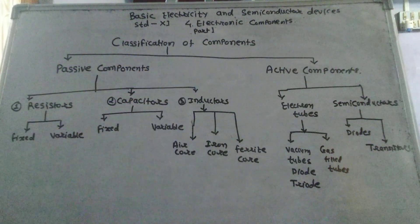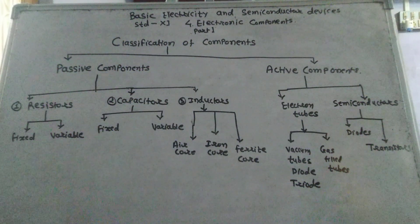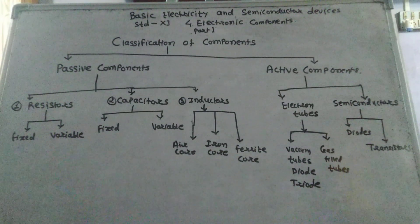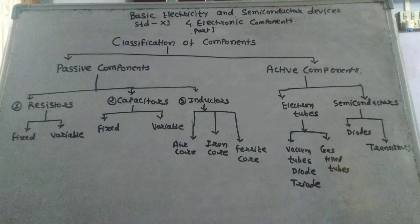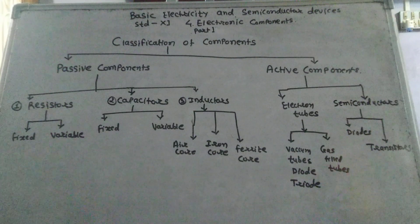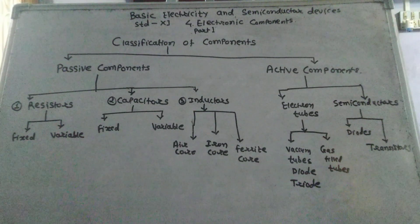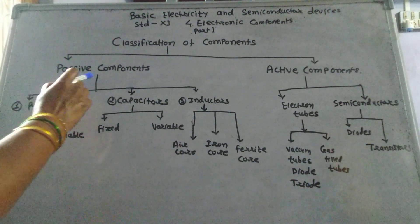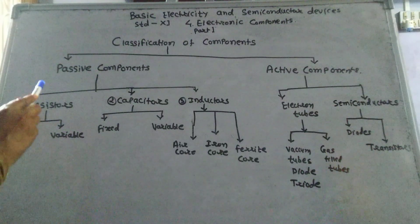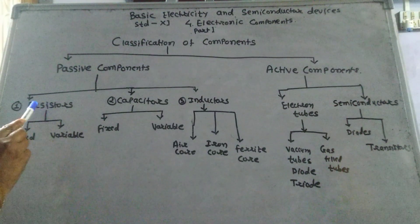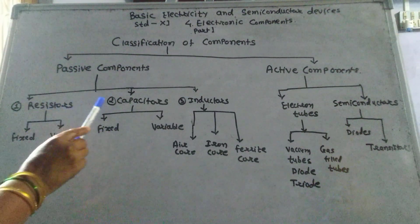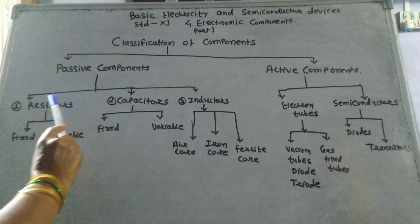Classification of components in electronic circuits: there are only five varieties of electronic components, and they are classified into two groups — passive components and active components. There are three types of passive components: resistors, capacitors, and inductors.